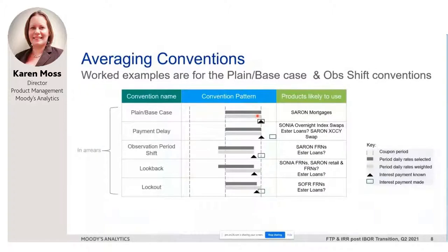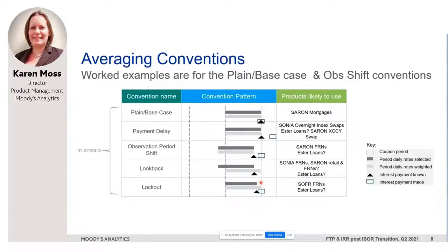Where clients would prefer notice of the interest amount, variations to the base case are being suggested. Payment delay is very similar to the base case but the actual interest payment is made a couple of days after the end of the interest period. With an observation period shift, the rates that are compounded shift back into being selected from the previous coupon period. Lookback is very similar to observation period shift — also a lagged convention — but with different treatment of business days. Lockout is similar to the plain base case, but towards the end of the period the last few days' rates are frozen so the customer knows ahead of time what the full coupon payment will be.